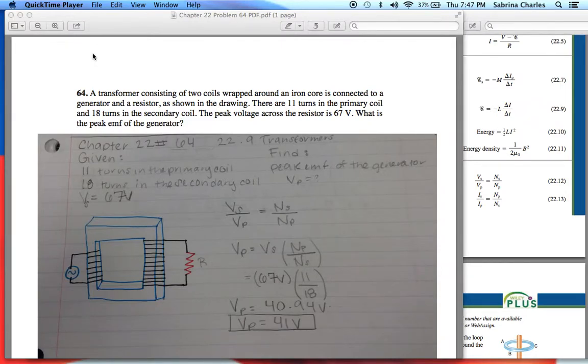Greetings, I was assigned chapter 22 problem number 64, which is from section 9 that focuses on transformers. A transformer consisting of two coils wrapped around an iron core is connected to a generator and a resistor.